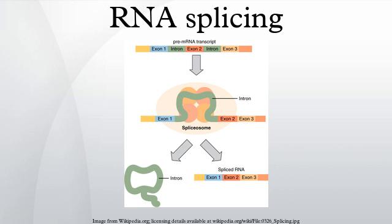The consensus sequence for an intron is: MAG cut GURAGU, intron sequence. It is noted that the specific sequence of intronic splicing elements and the number of nucleotides between the branch point and the nearest three-prime acceptor site affect splice site selection.